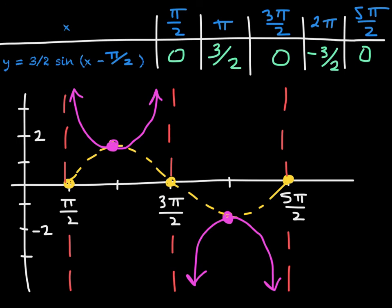This is the end of this lesson. It was relatively short because we're using the graphs of sine and cosine to get the graphs of cosecant and secant. So as long as you're comfortable with sine and cosine, which we already studied in an earlier lesson, you should be fine finding secant and cosecant.